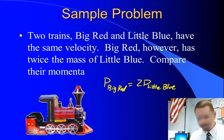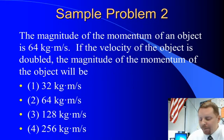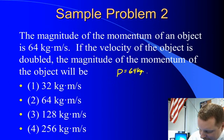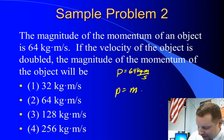Let's look at another one. The magnitude of the momentum of an object is 64 kilogram meters per second. We also know momentum is mass times velocity.